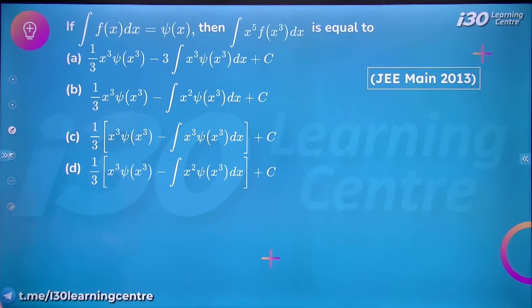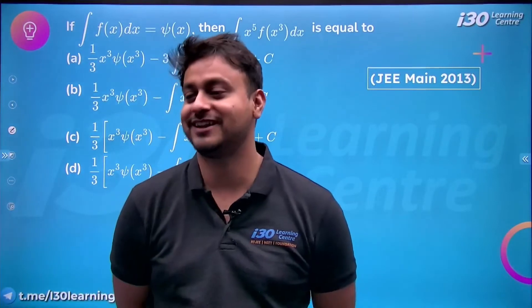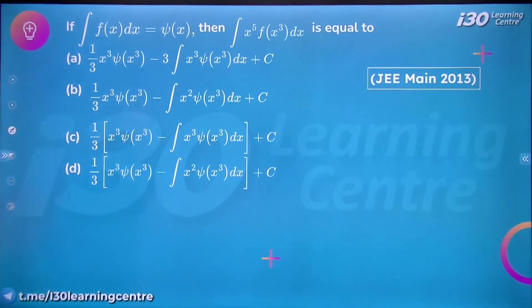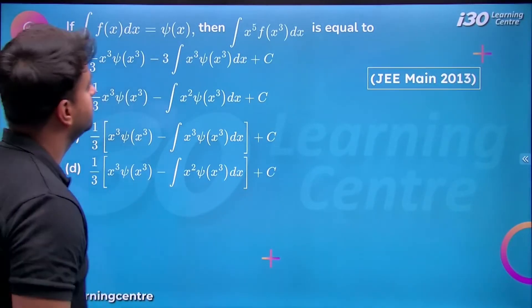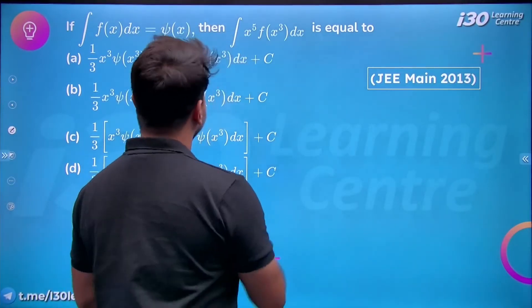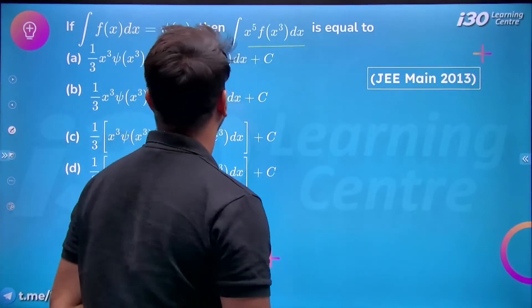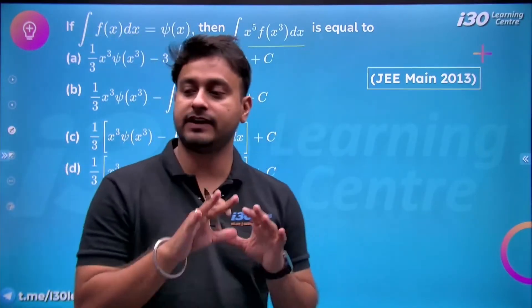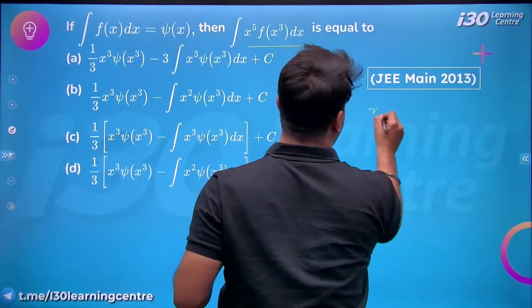This is a very smart integration problem which has been asked many times at JEE Mains level. It looks quite complicated to students to attempt such questions in JEE Mains, but if your concepts are strong and you've practiced well, I don't think you will have lot of problems. Let me start with how we can approach this question. If you don't know this integration and you're given ∫f(x)dx = ψ(x), and the function's argument is x³, it looks complicated right now. We need to bring it somewhat like f(x), so I've put x³ = t.